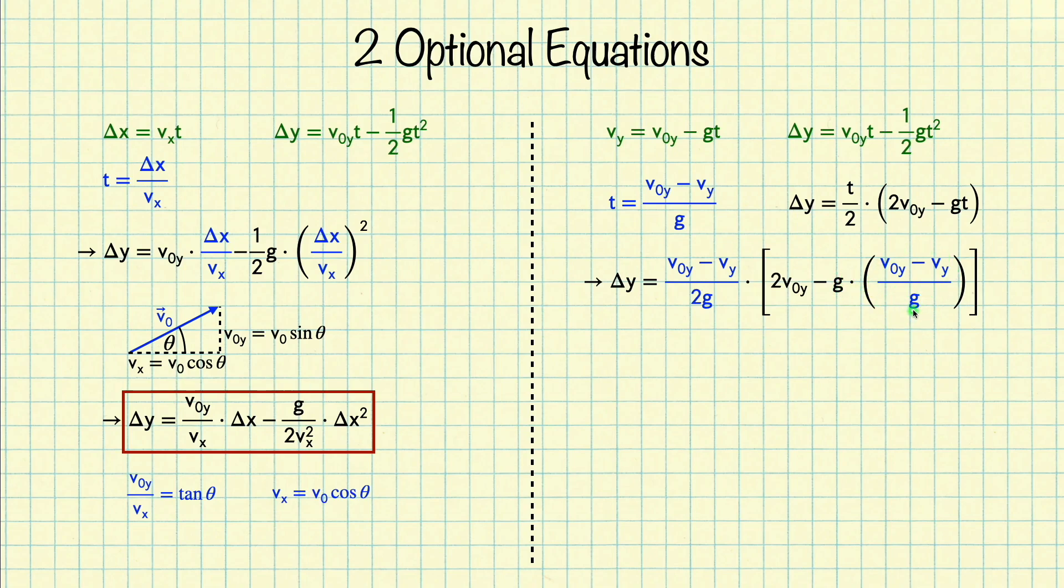And I'm going to be left with 2v_0y minus v_0y, and then minus minus, so plus v_y. So this gives me the following expression. 2v_0y minus v_0y is just v_0y. So that part in the parentheses will become v_0y plus v_y.